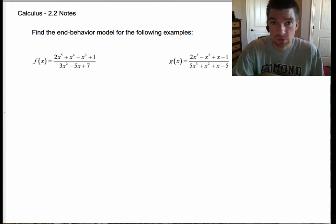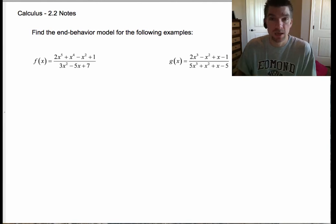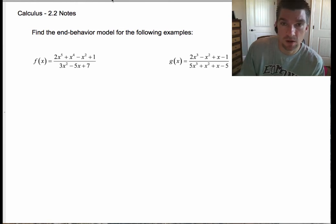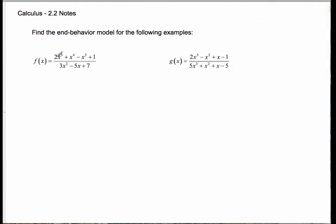So let's go ahead and look at these two examples we've got right here and see if we can't figure out what the end-behavior models are. First off, the most important thing is we need to know what our leading terms are. On the left, it's 2x to the 5th over 3x squared. On the right, it's 2x cubed divided by 5x cubed.